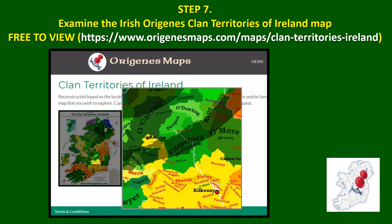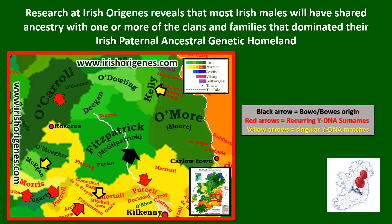You can now go back and select the clan territories of Ireland map. This map was reconstructed based on castle locations and the historically associated clans and families. When you view this map for the area you've identified, what I have found in my research is that most Irish males will be related to one or more of the clans or families that dominated their Irish paternal ancestral genetic homeland. You can see here that Boe, who lived on the Laois-Kilkenny border, is literally surrounded by clans and families that appear in the YDNA test results.